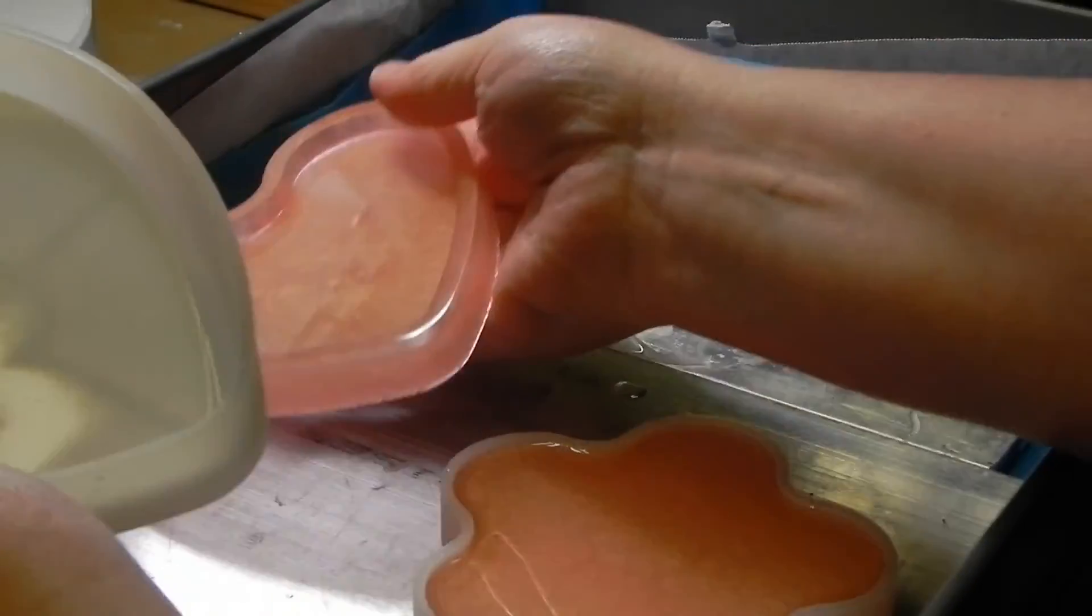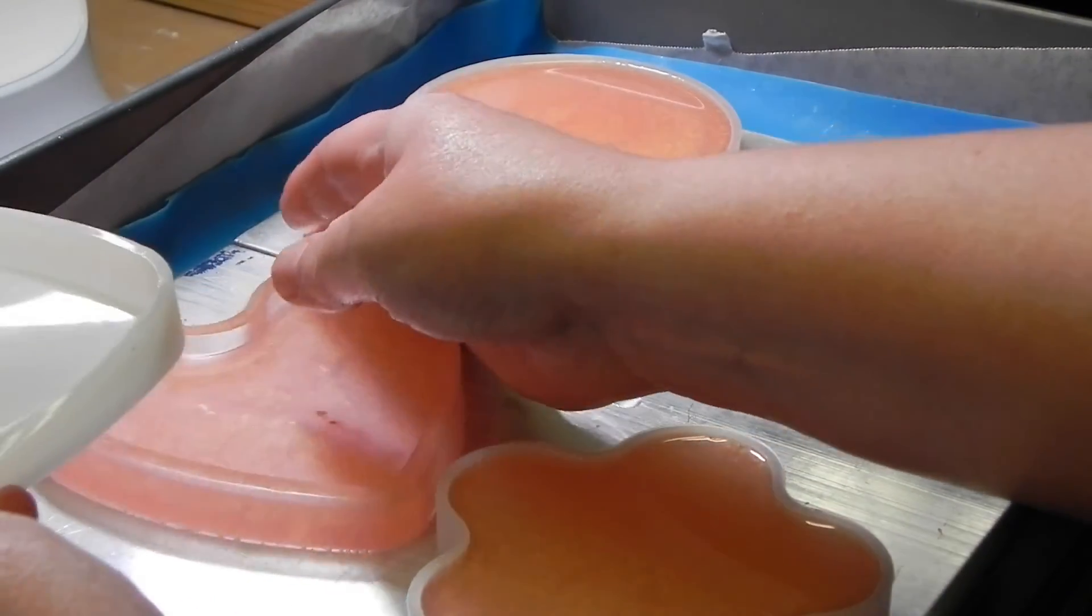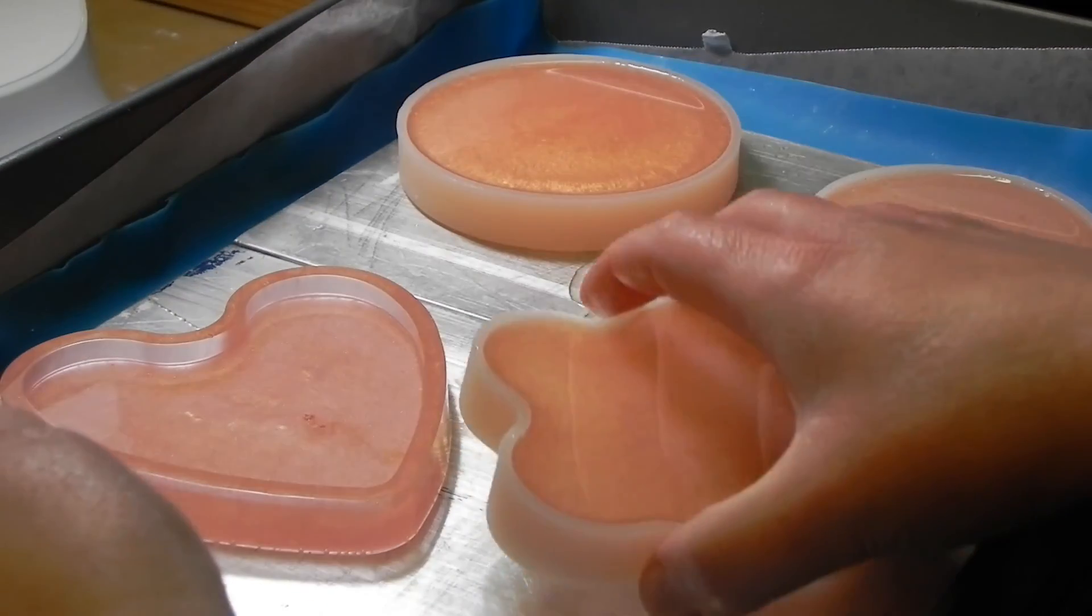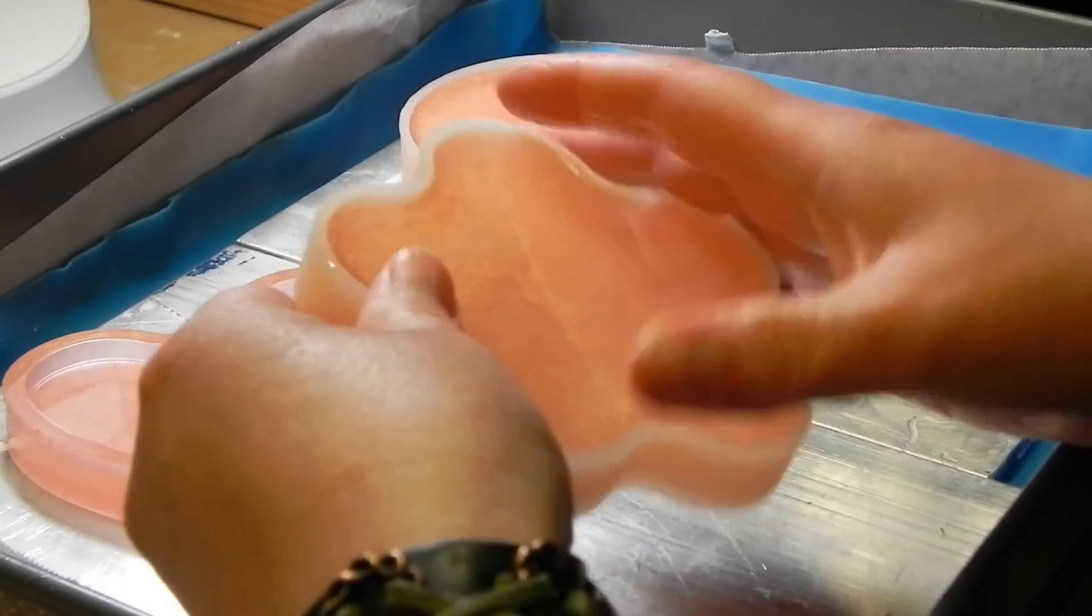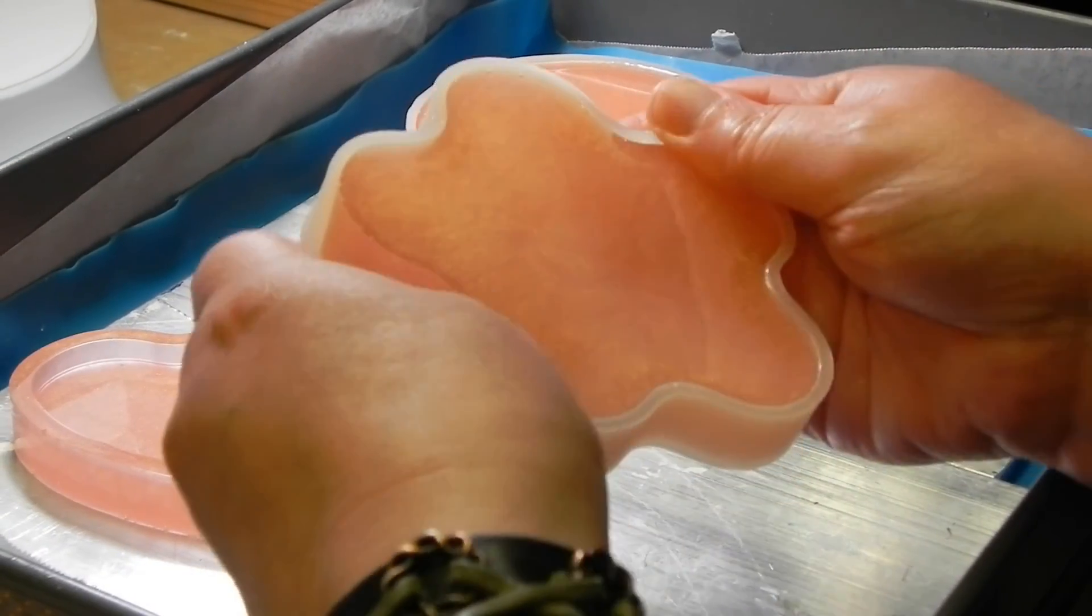It is a good idea to set items on a flat level surface for a day or two just to be safe. Some resins fully cure faster than others. Some can take 72 hours or more. Don't forget to put your molds away.